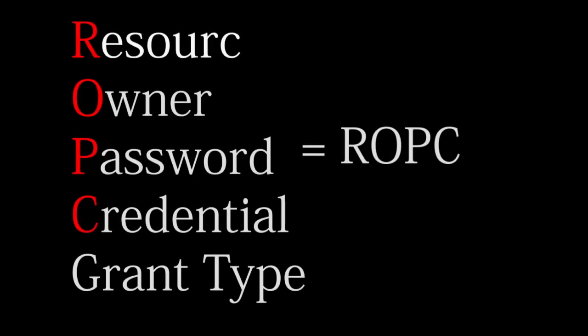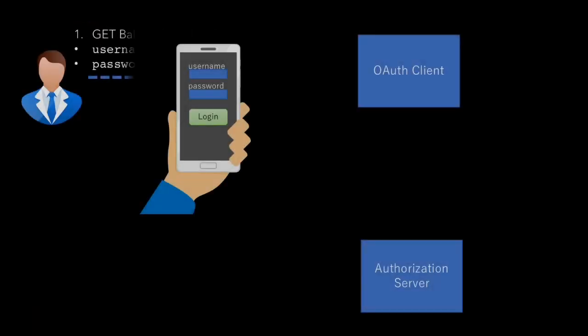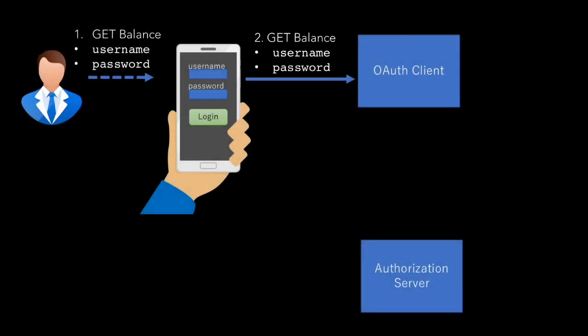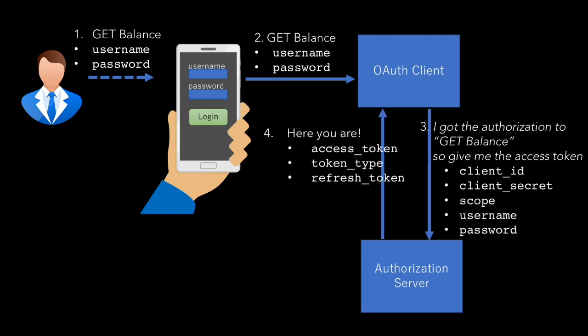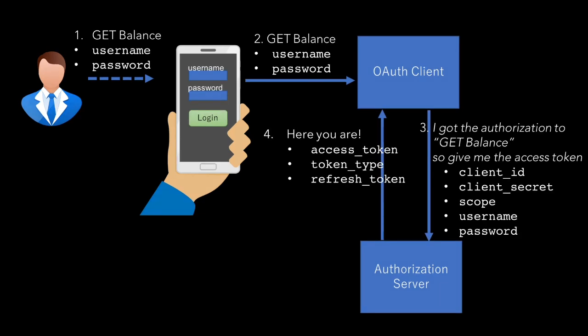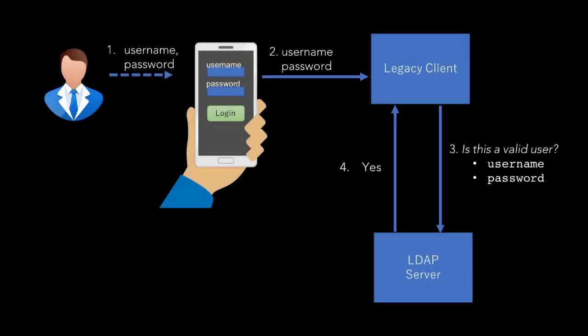The resource owner password credential grant type is a kind of flow where the user gives his password to the client, which relays it to the authorization server to get the access token. From the user interface point of view, it works just like a legacy application that takes your password to authenticate against the LDAP server or other database.